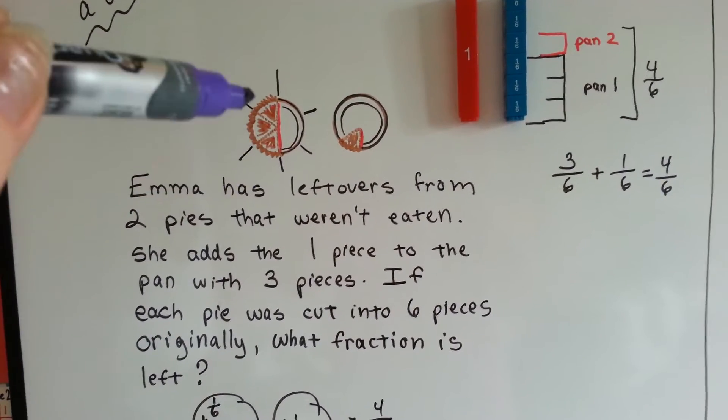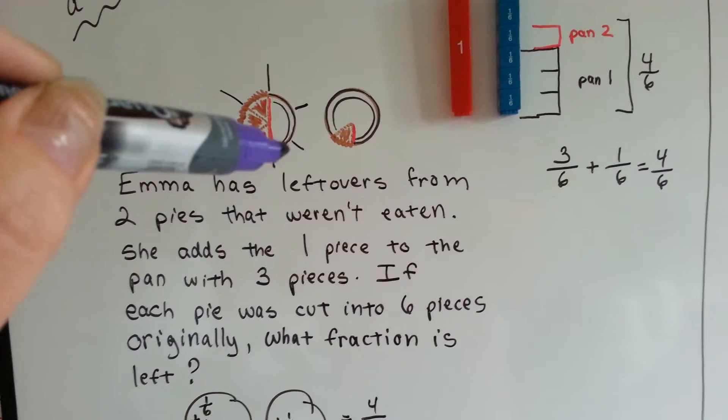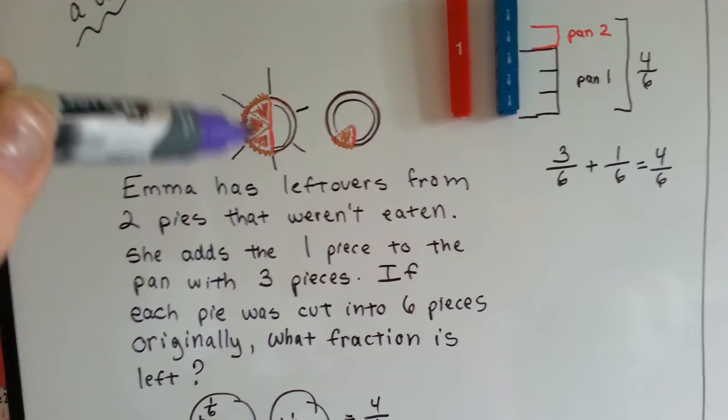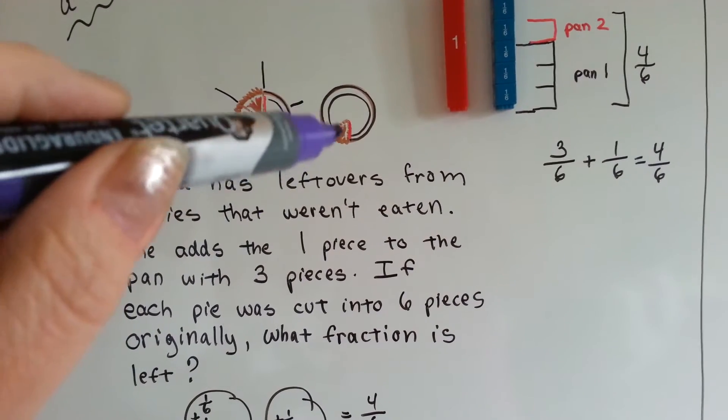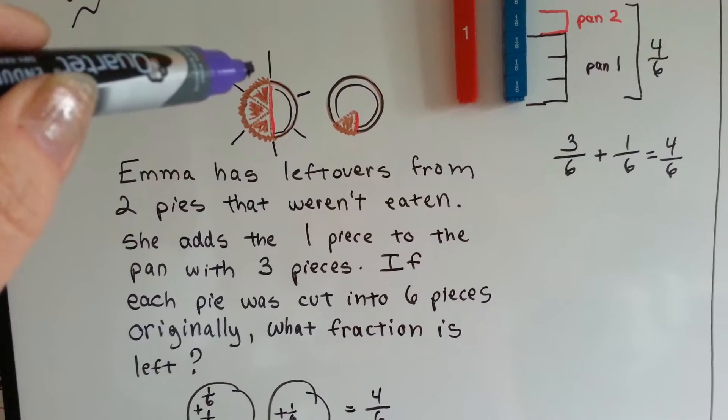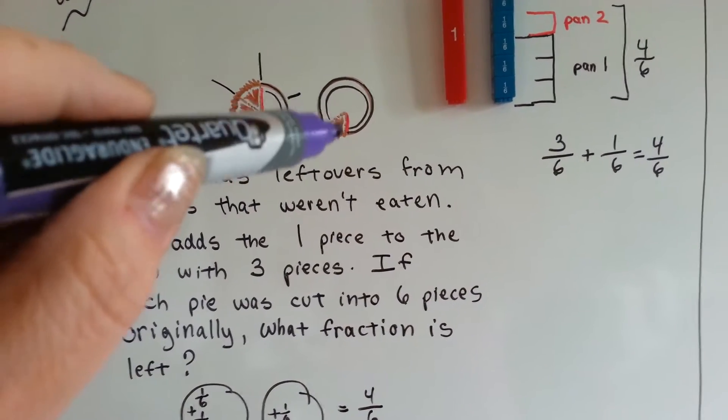The pies were cut into 6 pieces. 1, 2, 3, 4, 5, 6. There's 3 pieces in this pan, and only 1 in this pan. So, she's going to add 3 sixths plus 1 sixth.